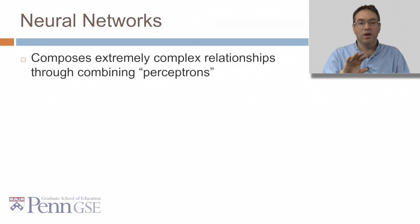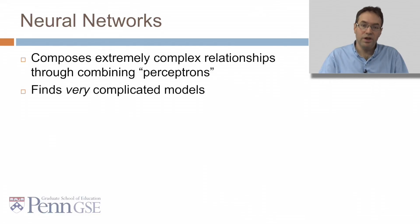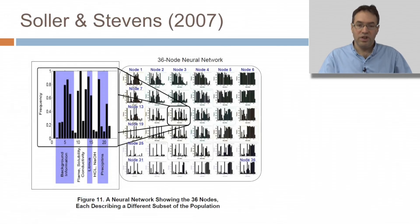Neural networks compose extremely complex relationships through combining what are called perceptrons. They find very complicated models. Here's an example from Soller and Stevens, where they show a neural network showing the 36 nodes, each one describing a different subset of their data population.